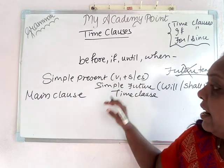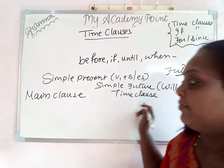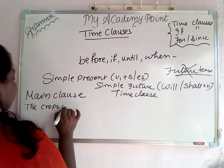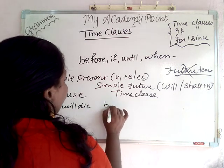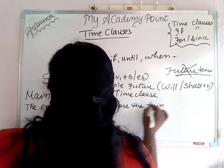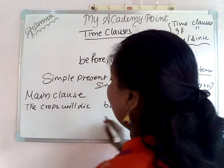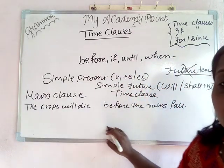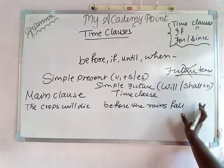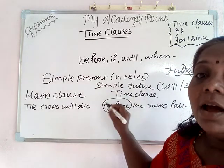Now let me show you the sentences. The first one is: 'The crops will die before the rains fall.' Here, 'the crops will die' is the main clause, and 'before the rains fall' is the time clause, because the linking word 'before' is coming.